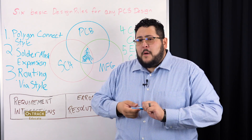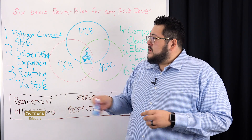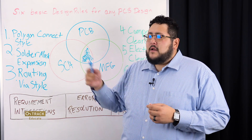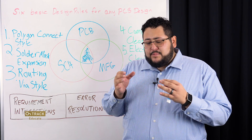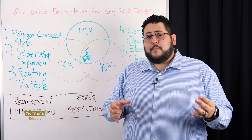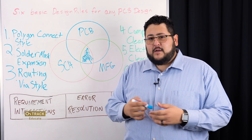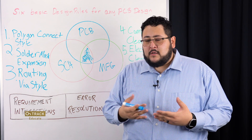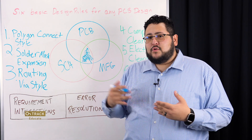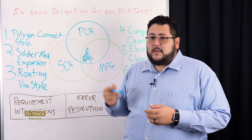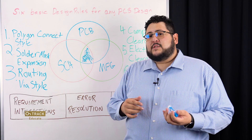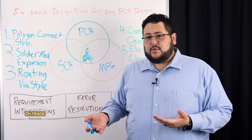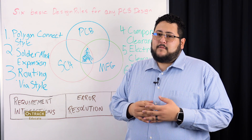Let's start with the polygon connect style. These rules are often overlooked by a lot of people. The polygon connect style helps you define how you connect from a via or pad over to the polygon itself. That ensures that you can have proper thermal connection and proper current connection to the copper in these polygons. If you don't have that information, it's quite possible that you miss a pad and don't connect it properly to a polygon.